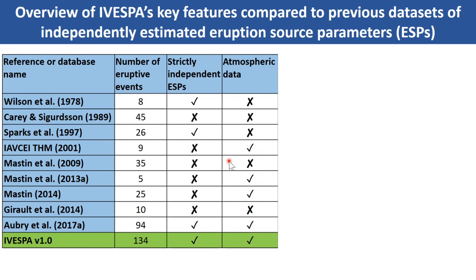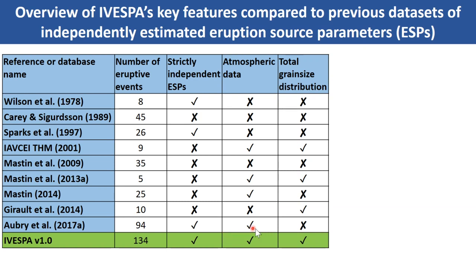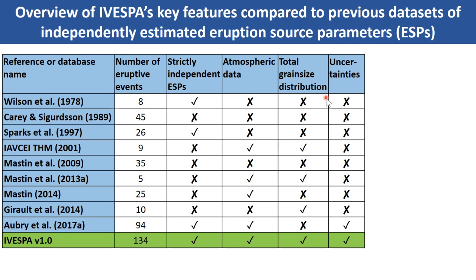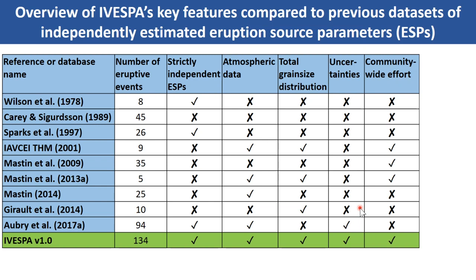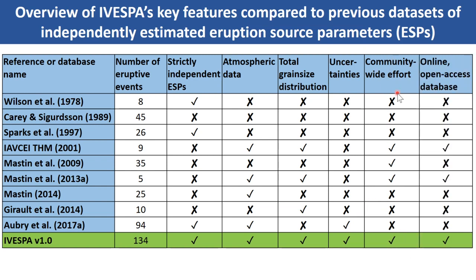The role of atmospheric conditions in plume dynamics has gained a lot of attention recently, and in iVespa we provide atmospheric conditions from two climate reanalyses, so you get two different sets of atmospheric conditions. Total grain size distribution has also been collected, which again is not the case for all previous datasets. Critically, we systematically compiled uncertainties — as you know, anything volcanological has huge uncertainties, but the vast majority of previous datasets did not compile this. Lastly, iVespa is a community-wide effort and will have an online and open-access database.